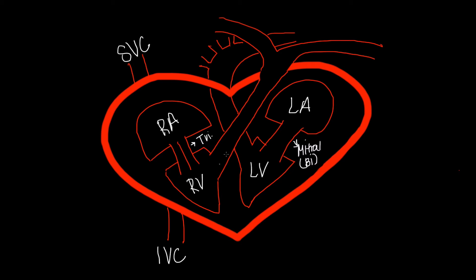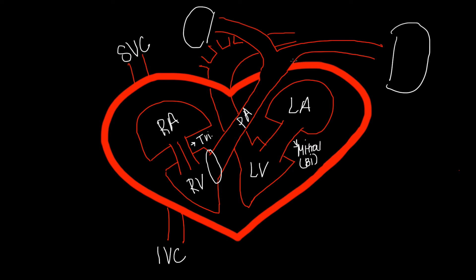Now, coming out of our right ventricle is going to be our pulmonary valve — think of the valve like a door. And this is actually our pulmonary artery. Pulmonary — we should be thinking lungs — it does exactly what you think: this goes to the lungs. So that's going to carry blood to both of our lungs. And then this here is going to be our aortic valve, like that door, and this is going to be our aorta — so I'll put a big A there so we know that's our aorta.